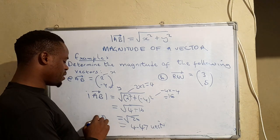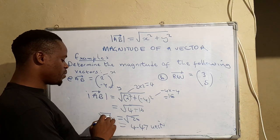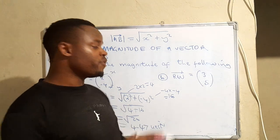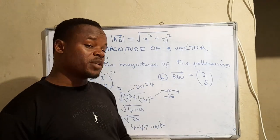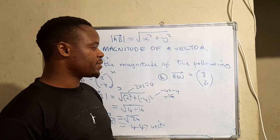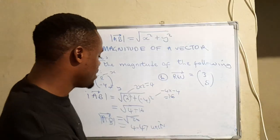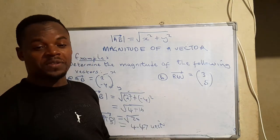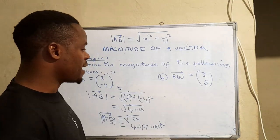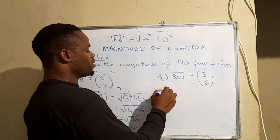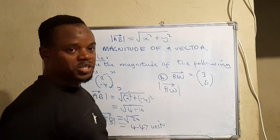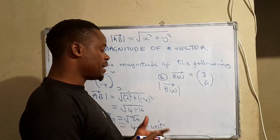And just like that we have actually found the magnitude of vector AB. Let's move on to the second one. If you want you can pause the video then you give it a shot just to see if you're able to find the correct answer, then you play the video just to counter-check with the answer that I'm going to find. So equally we're going to indicate that we are resolving the magnitude of vector RW.